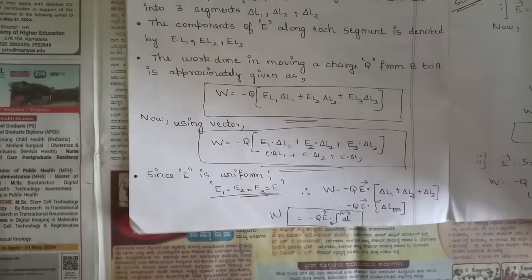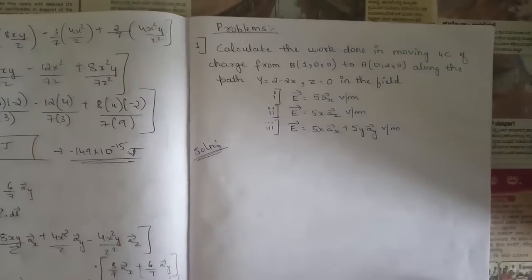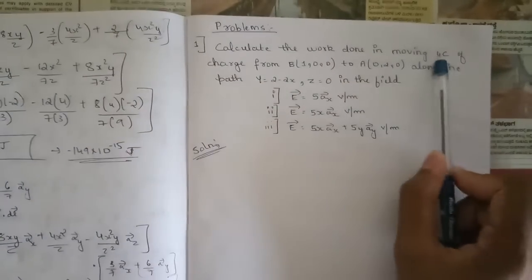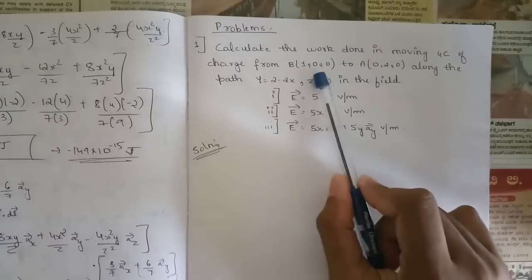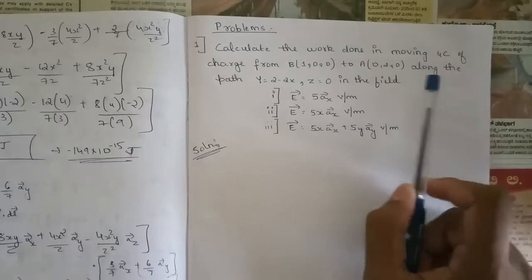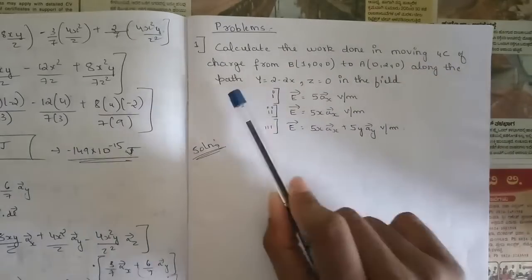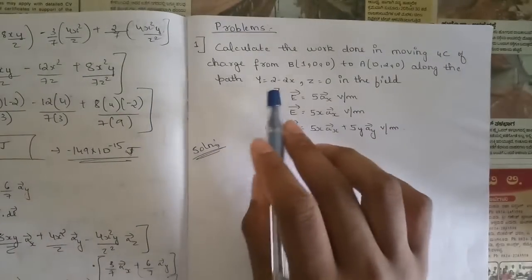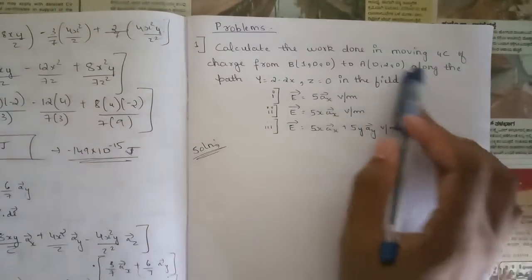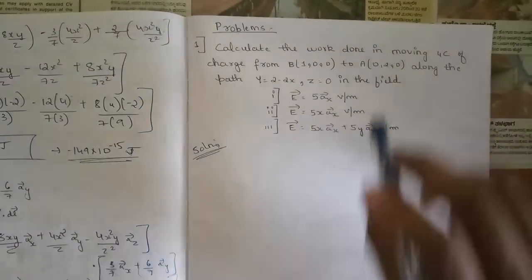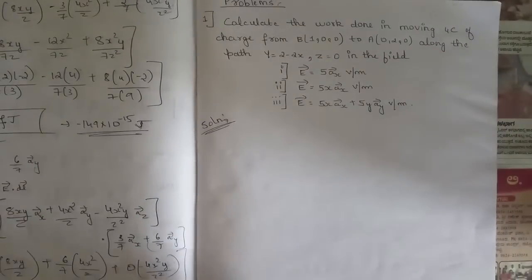Let's solve a problem to clarify the concept. The question is: calculate the work done in moving 4 coulombs of charge from point B at (1, 0, 0) to point A at (0, 2, 0) along the path y = 2 - 2x, z = 0. The electric field is given in three sub-questions which we will solve one by one.